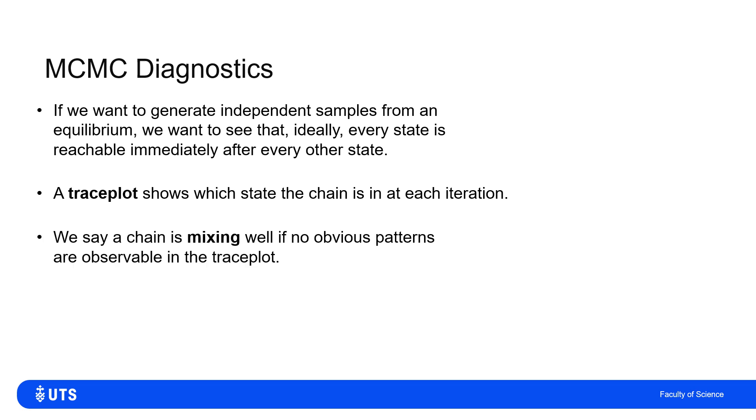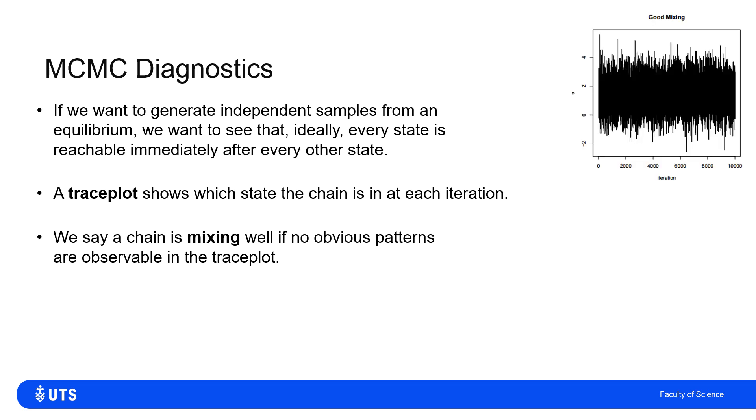And you'd say a chain is mixing well if there's no observable patterns in the trace plot. So what we really want to see is something like this. This chain is mixing well, because we've plotted up the vertical axis, which state the chain is in. Plotted the number of moves, number of iterations along the bottom. And that's just a big scribble. There's no obvious pattern. There's no obvious trend. That's mixing perfectly. That looks great.